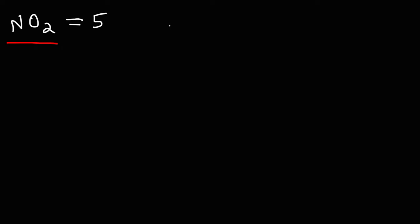Nitrogen has five valence electrons. Oxygen has six, and there are two of them, so we need to multiply that by two. Two times six is twelve. Twelve plus five is seventeen. So we have a total of seventeen valence electrons in this structure.